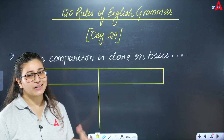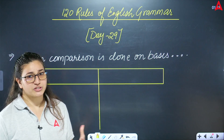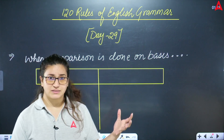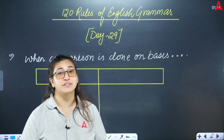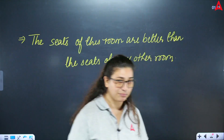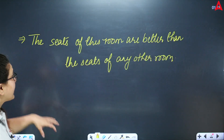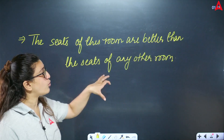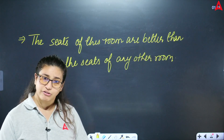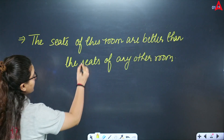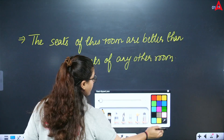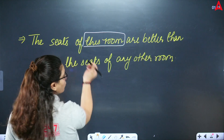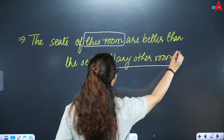These specifications are related to your exams. When comparison is done on a basis, we do some comparisons. For example: 'The seats of this room are better than the seats of any other room.' Here you have compared this room with some other room.